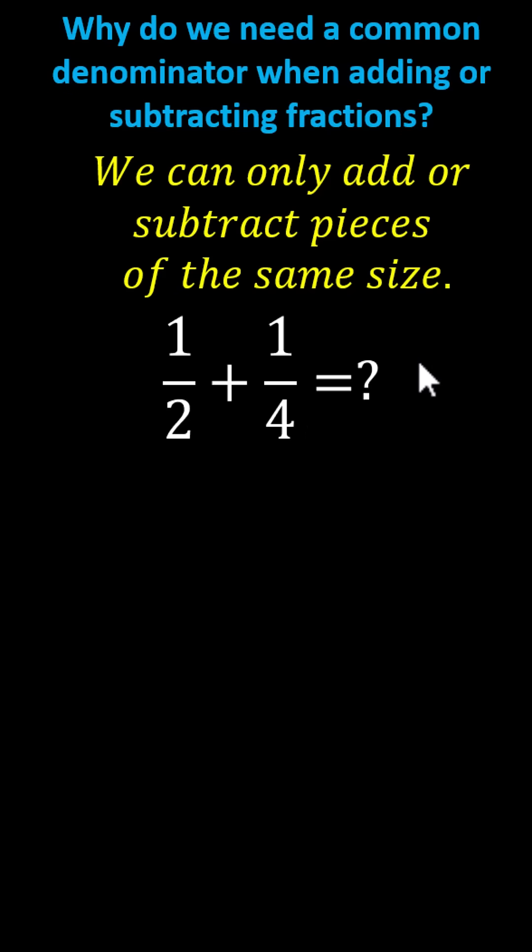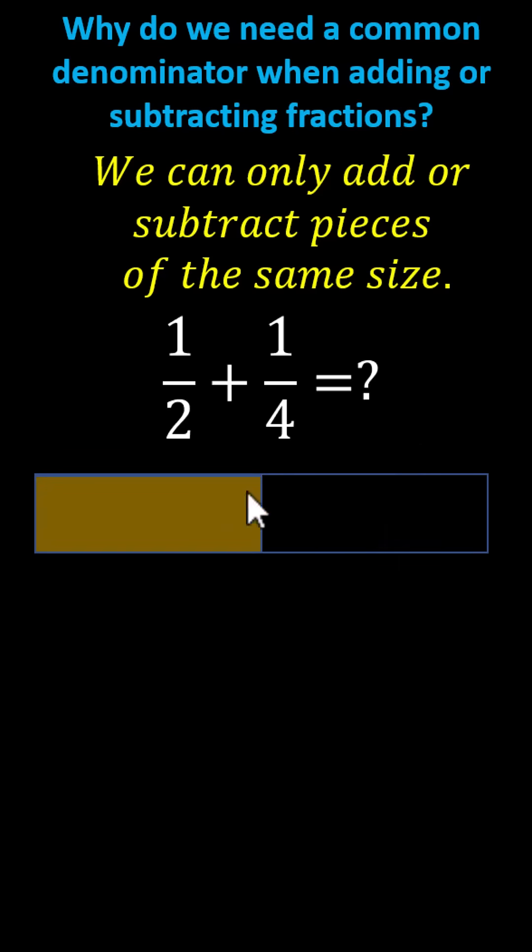To get a better feel for this, let's model the fraction one-half and one-fourth, where this bar represents one whole. To model one-half, we cut this into two equal pieces and shade one of them. This is the model for one-half, and then for one-fourth, we take the bar that represents one whole and cut it into four equal parts and shade one of them.